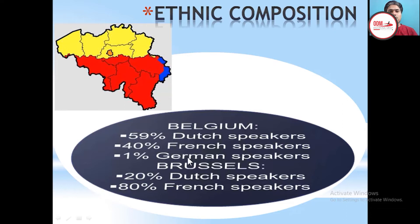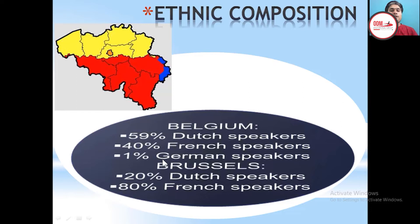Only a small number of people spoke German. This was the condition of the whole country. But if you see Brussels, the capital city, the condition is reversed. In the whole country, 59 percent are Dutch-speaking — Dutch was the majority. But in the capital Brussels, the French-speaking people are in the majority. This shows the diversity of Belgium, and it was quite a challenge for the Belgian government.